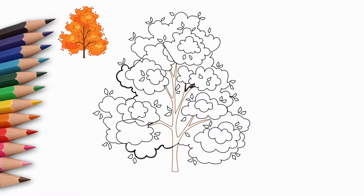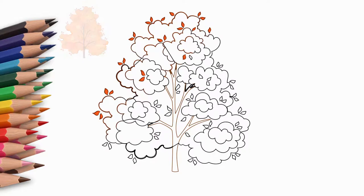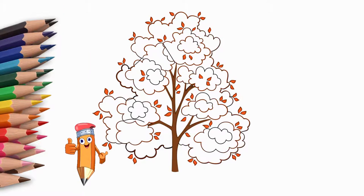First, paint the trunk. Now we paint the leaves on our tree with different yellow and brown colors. So we drew an autumn tree.